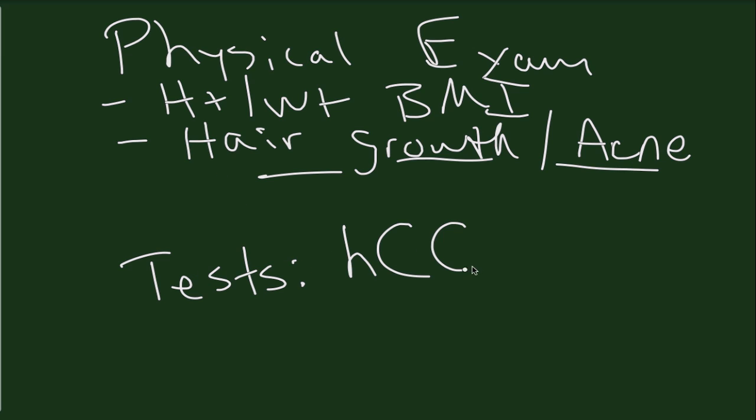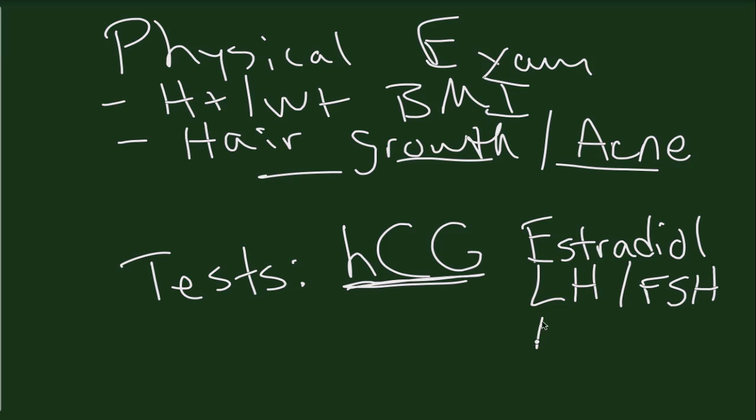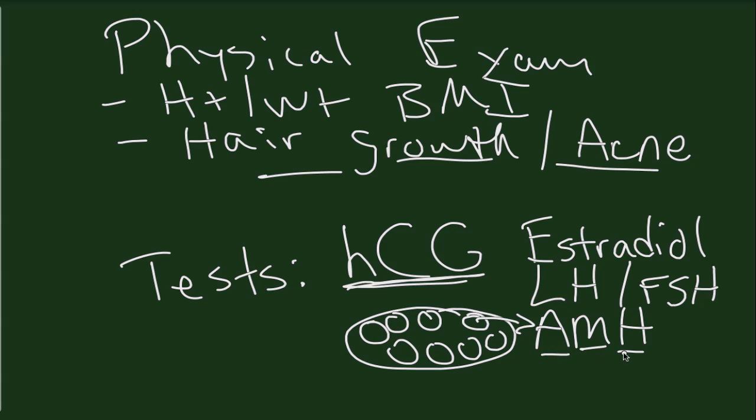In terms of the tests, what you're going to do first and foremost, since they're coming in complaining of irregular cycles, and if they're in the reproductive age, you're going to order an HCG. You never forget the pregnancy test. Another test that you're going to look at is in terms of ovarian function. You can get their estradiol level, their pituitary hormones that control their ovarian function, LH, which we mentioned before, and FSH, which is follicle stimulating hormone. You can actually look at their ovarian reserve or how many follicles they have by getting something called AMH, which is anti-mullerian hormone, and it actually comes from the cysts that you see on the ultrasound. AMH is an excellent marker of PCOS, and typically an AMH of over 4.0 is indicative of PCOS.